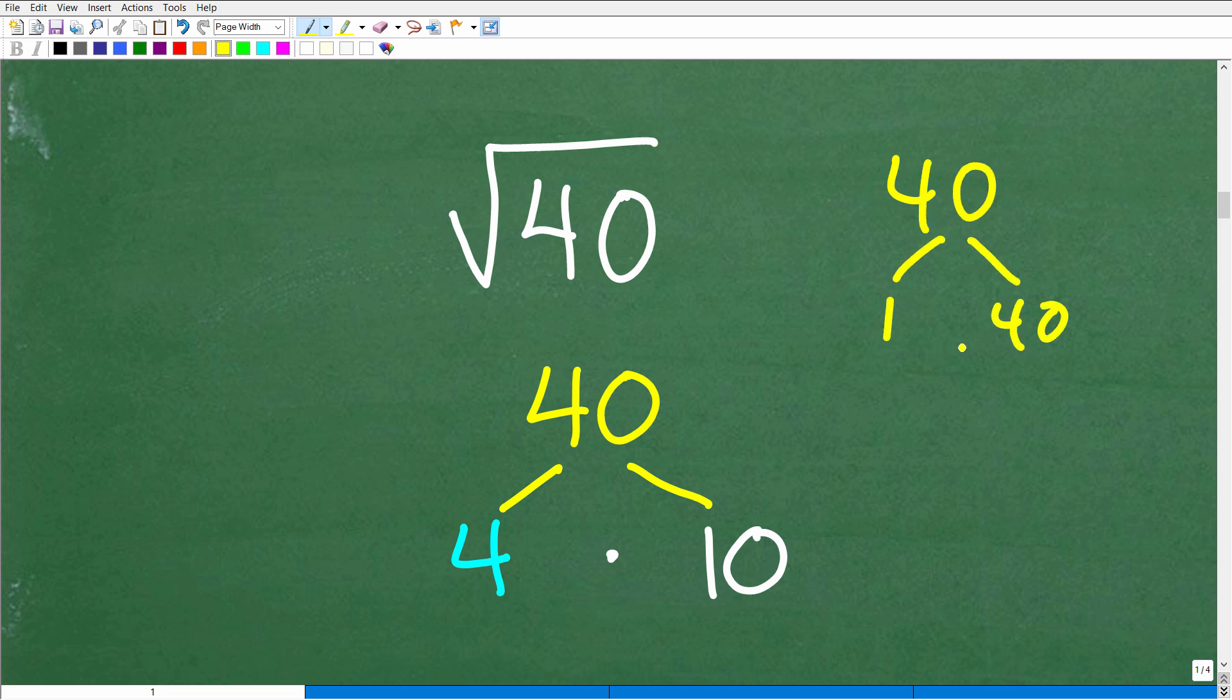And how about 2 times 20? Well, those are factors too, but they're not perfect squares. How about 4 times 10? Yes, indeed, we hit the jackpot because 4 is a perfect square. So it's not just any factor. It's perfect square factors we're looking for. So we could think of 40 as 4 times 10.